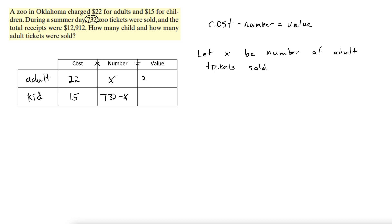Alright, multiply across, we get 22x, and down here we get 15(732 minus x). The value, how much money did each of these bring in? Well, the total value comes from right here, 12,912. So we add these two up, to get the total value, that number comes to 12,912.